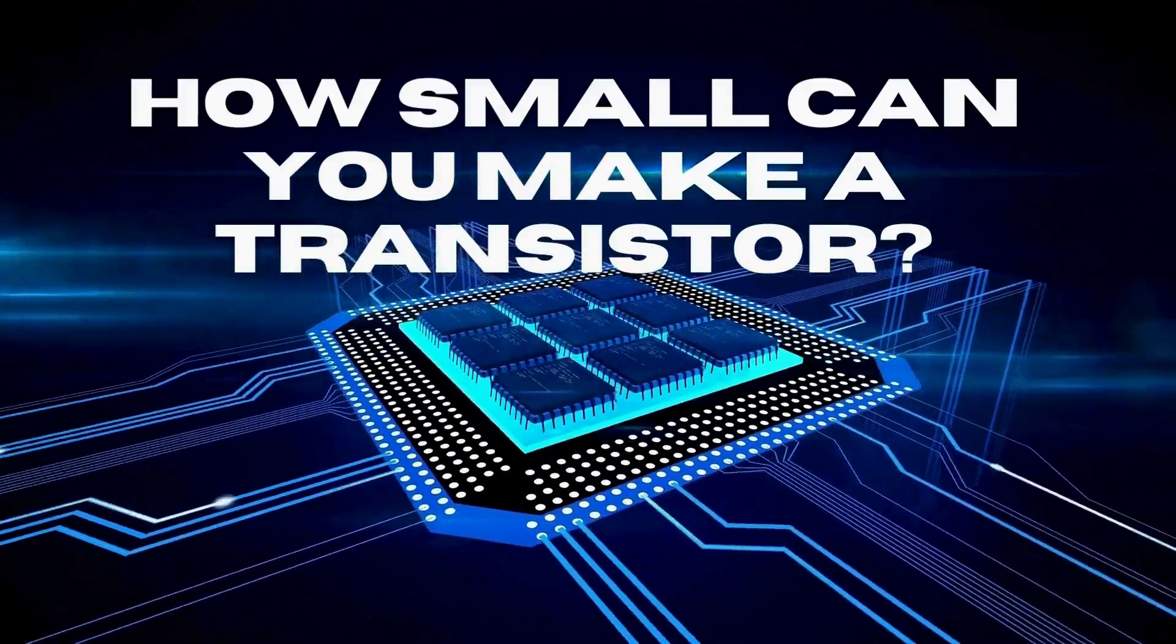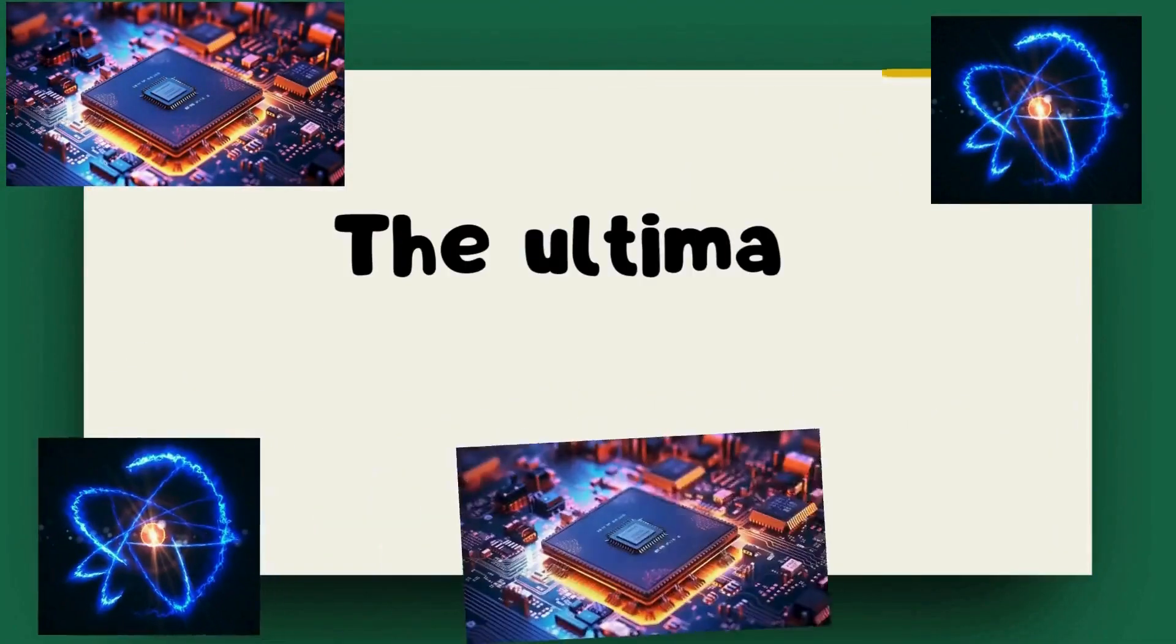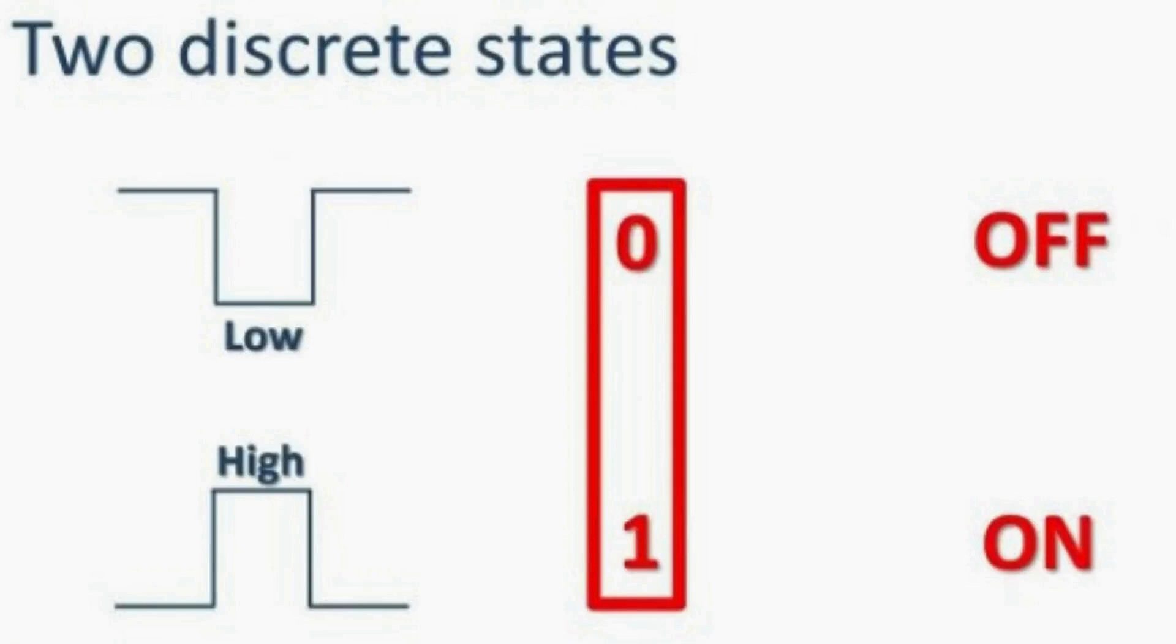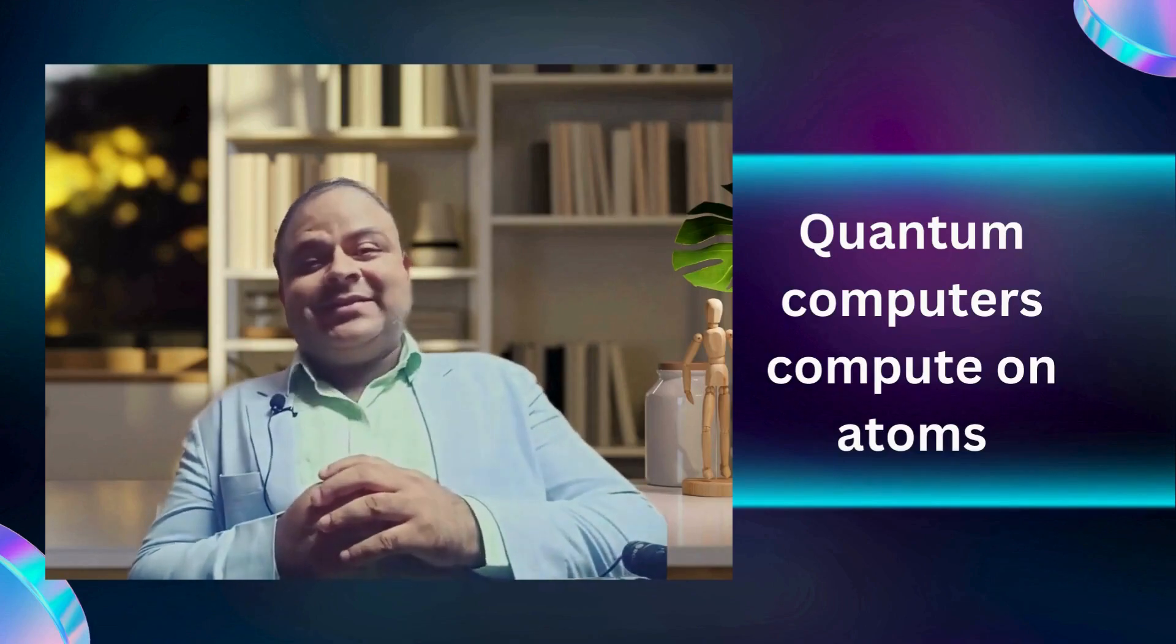Richard Feynman was one of the founders of quantum electrodynamics. And he asked a simple question with himself: How small can you make a transistor? And he realized that the ultimate transistor is an atom. One atom that could control the flow of electricity, not just on or off, but everything in between. We have to go to quantum computers, computers that compute on atoms rather than on transistors.